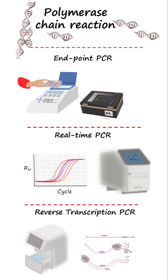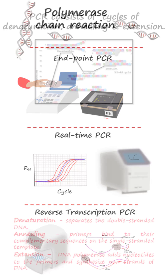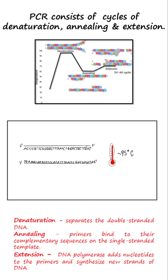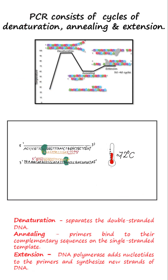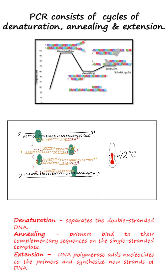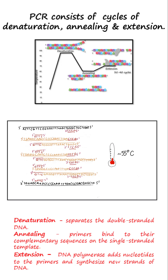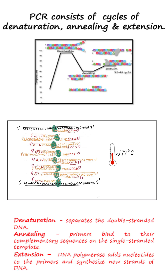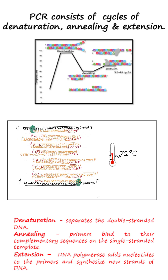The various types of PCR work on the same principle: cycles of denaturation, annealing, and extension. Thus, one strand of a specific section of DNA becomes 2, 2 becomes 4, and so on.